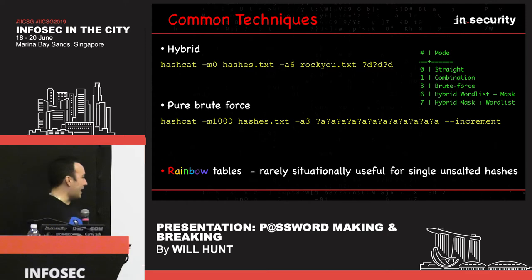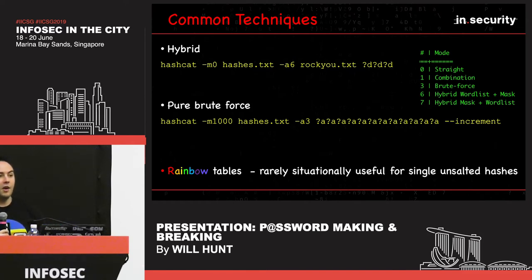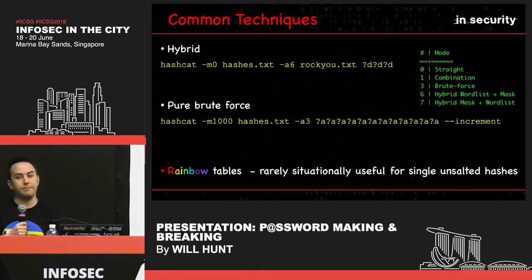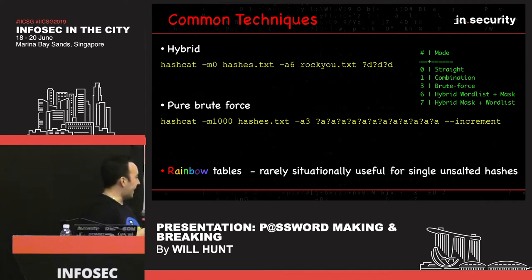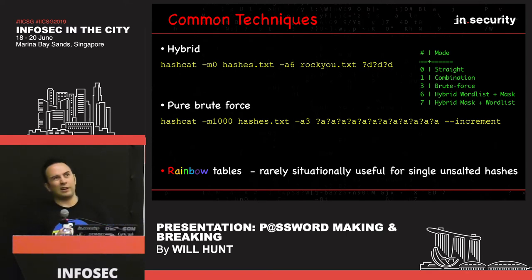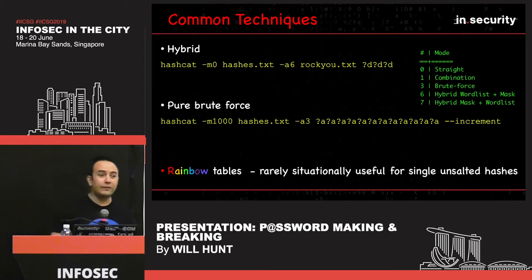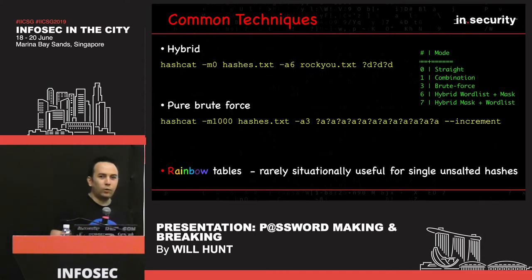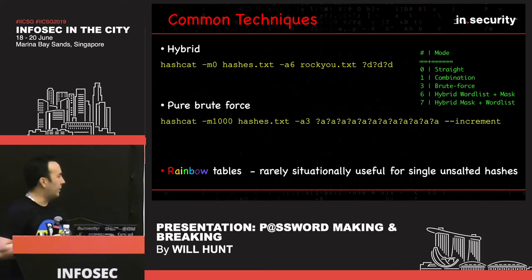Rainbow tables are rarely situationally useful these days. A rainbow table is a list of pre-computed hashes with their clear text, saving the step of hashing your candidate before comparing it to your stolen hash. The problem is they have a huge storage requirement — you can download LM, NTLM, MySQL, some SHA variants for free, but they only go to around nine or ten characters for free, and even then we're talking terabytes of storage. The second you have a password longer than ten characters, you're not going to crack it with rainbow tables anyway. Paid services exist but they're typically not used in the field these days.